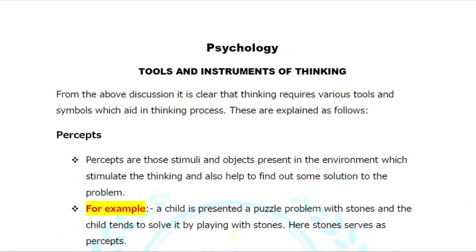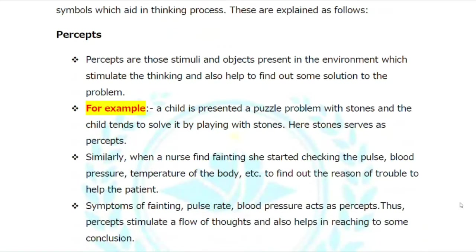From the above discussion, it is clear that thinking involves tools and symbols which are part of the thinking process. Thinking process means we need to understand some of the tools and symbols. The first point is: Percepts.